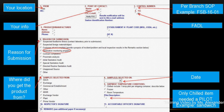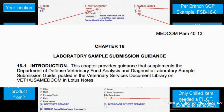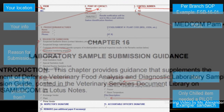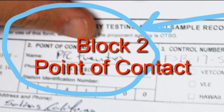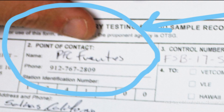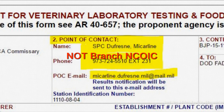In order to avoid unnecessary mistakes, you need to follow the block-by-block instruction of the Lab Sample Submission Guide or MEDCOM PAM 40-13 to fill out the DA Form 7539. Special note in Block 2 of the DA Form 7539, the point of contact: write or enter the name of the person who is sending the samples and has knowledge of the product, not your branch in COIC or warrants.